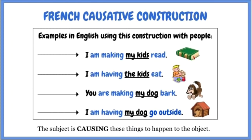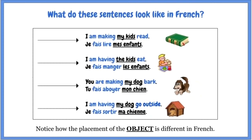So, first thing, I always like to show you some examples in English before I talk to you about what we're going to learn in French today. Some examples in English using this construction with people. If I want to say, for example, I'm having my kids read. Or, I'm having the kids eat. Or, you're making my dog bark. Or, I'm having my dog go outside. This is when you have the subject that is causing these things to actually happen to the object. So, now let's have a look at what these sentences look like in French.